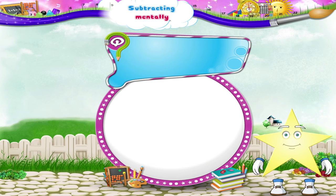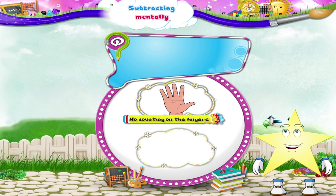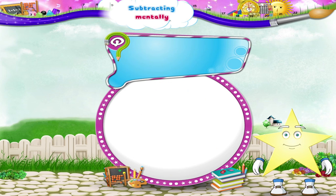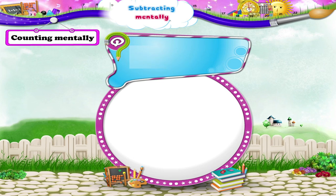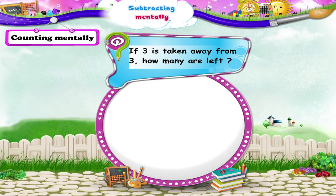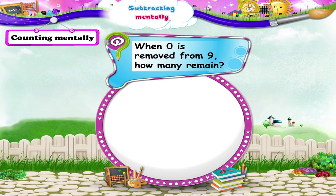Now that you have learnt to subtract mentally, let us do an activity together. No counting on the fingers or drawing dots and lines — let us answer by counting mentally. Let us begin. 3 taken away from 3: how many left? 3 minus 3 equals 0. When 0 is removed from 9, how many remain? That's 9 minus 0 equals 9.